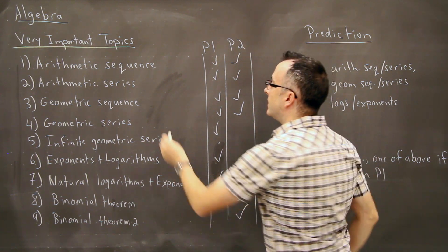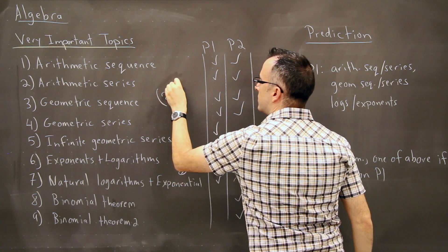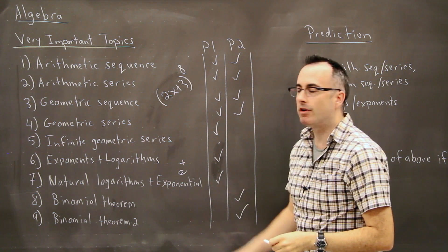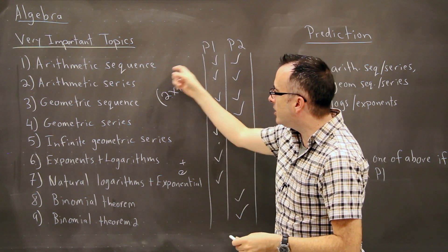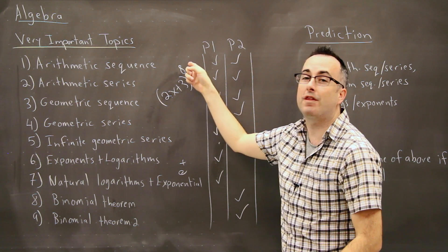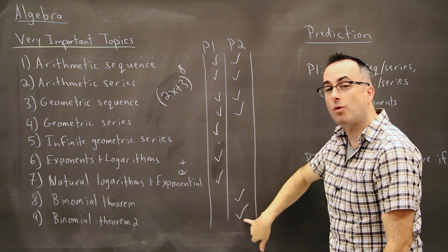This is when you have something like, I don't know, ax plus b, oh, let's say, I'll put numbers, like 2x plus 3, let's say, to the power of 8. And you've got to find, like, what's the term that has x cubed in it or something like that. How do you actually do these? These show up all the time. They're very heavily weighted on this, really important, and they're pretty much always on Paper 2.